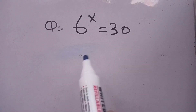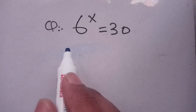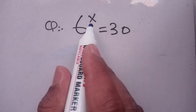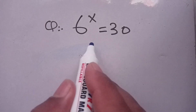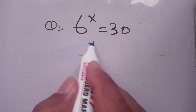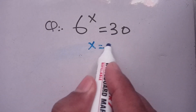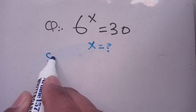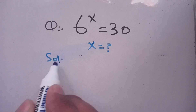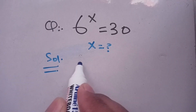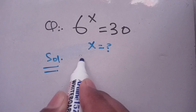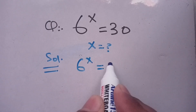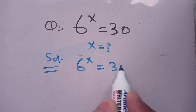Hello everyone. In today's video we are going to solve this exponential equation: 6 to the power x is equal to 30, and we have to find the value of x. Let us solve this. First of all we write this equation as it is: 6 power x is equal to 30.